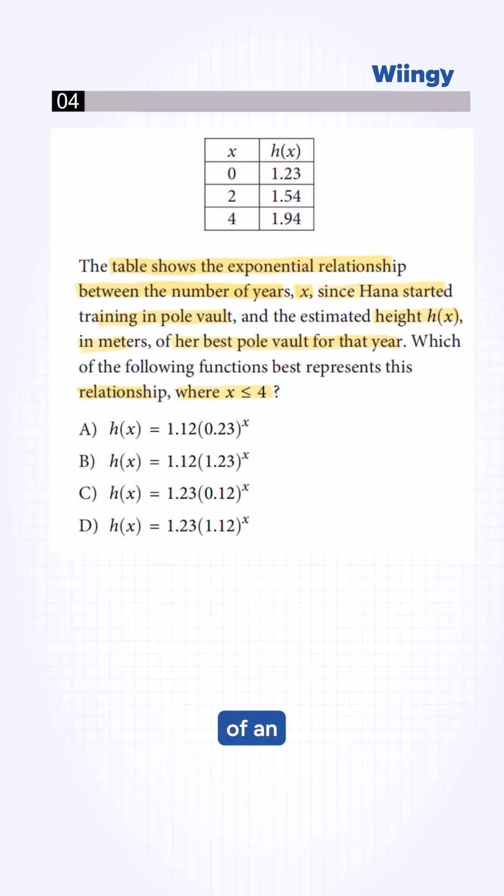So, the general form of an exponential function is h(x) equals a times b raised to x. Here, a is the initial value and b is the growth or decay factor.